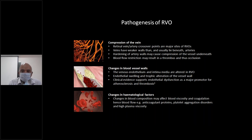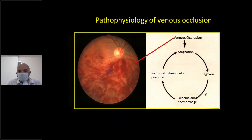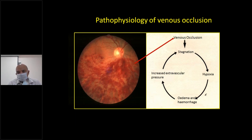In simple terms, venous occlusion can occur when there is stagnation of blood flow, which in turn leads to hypoxia, edema, hemorrhage, and increased extravascular pressure. When blood flow stops, there is hypoxia in the retina and increased extravascular pressure, so the veins burst open and blood spills out.